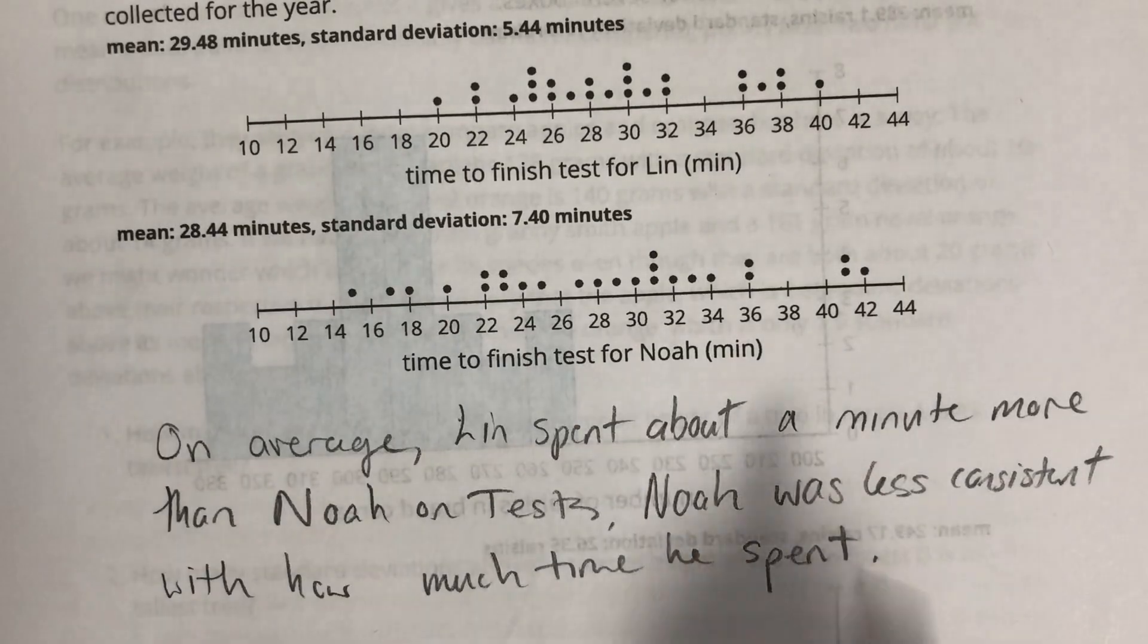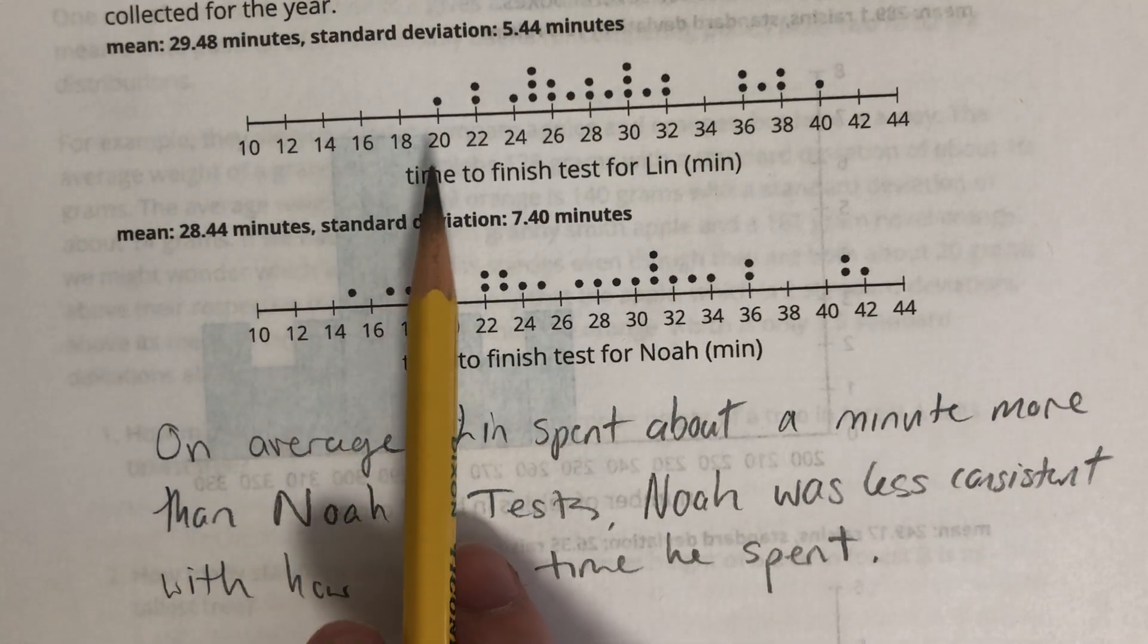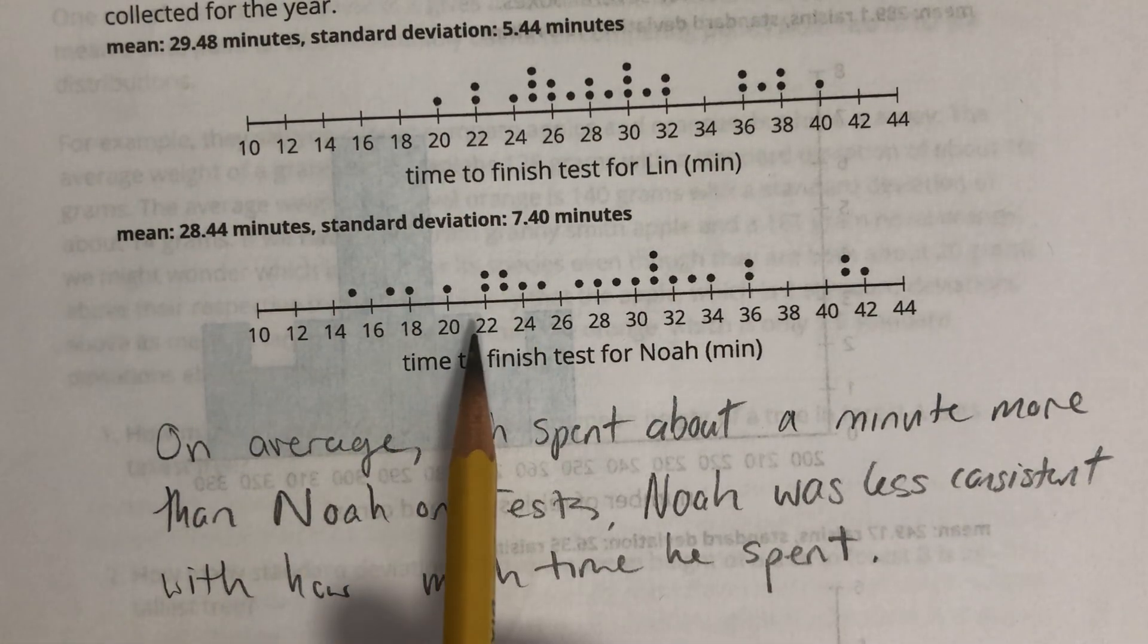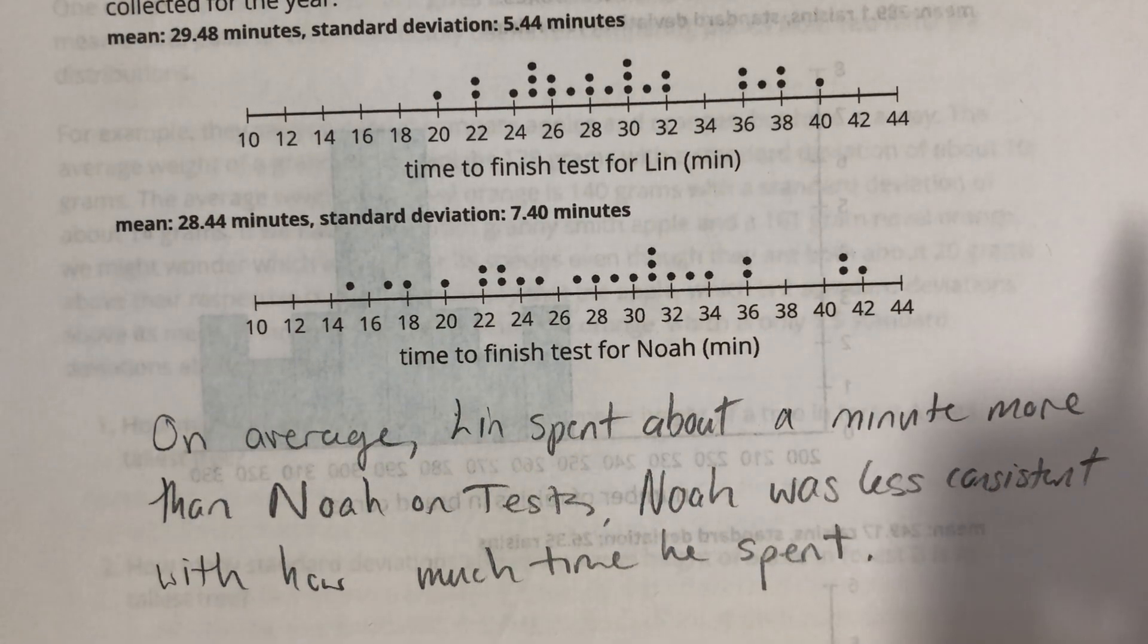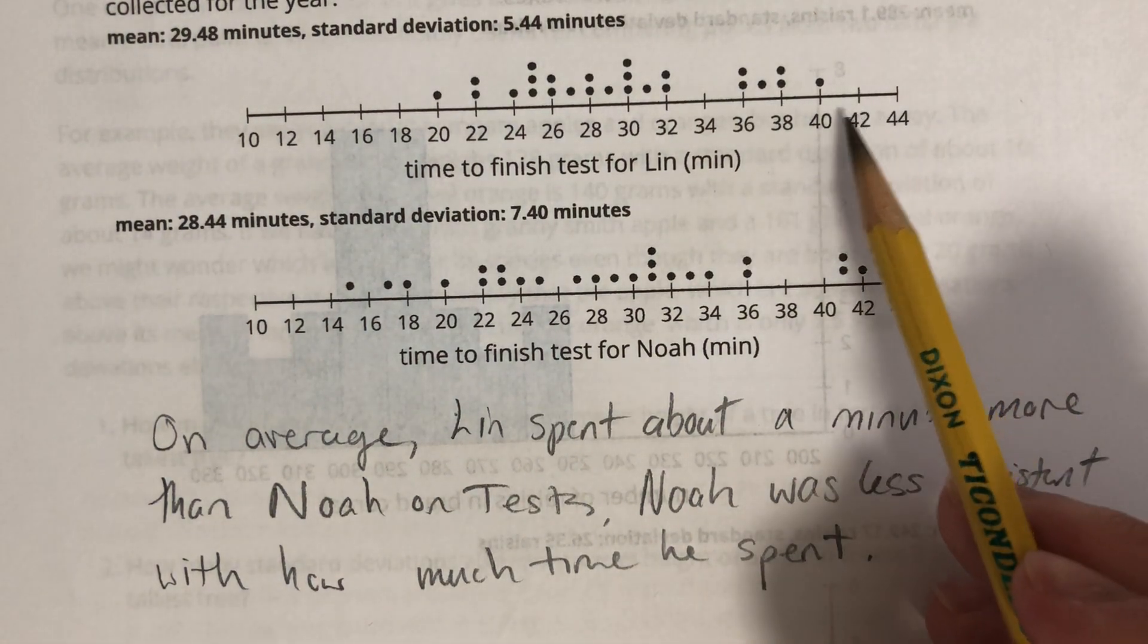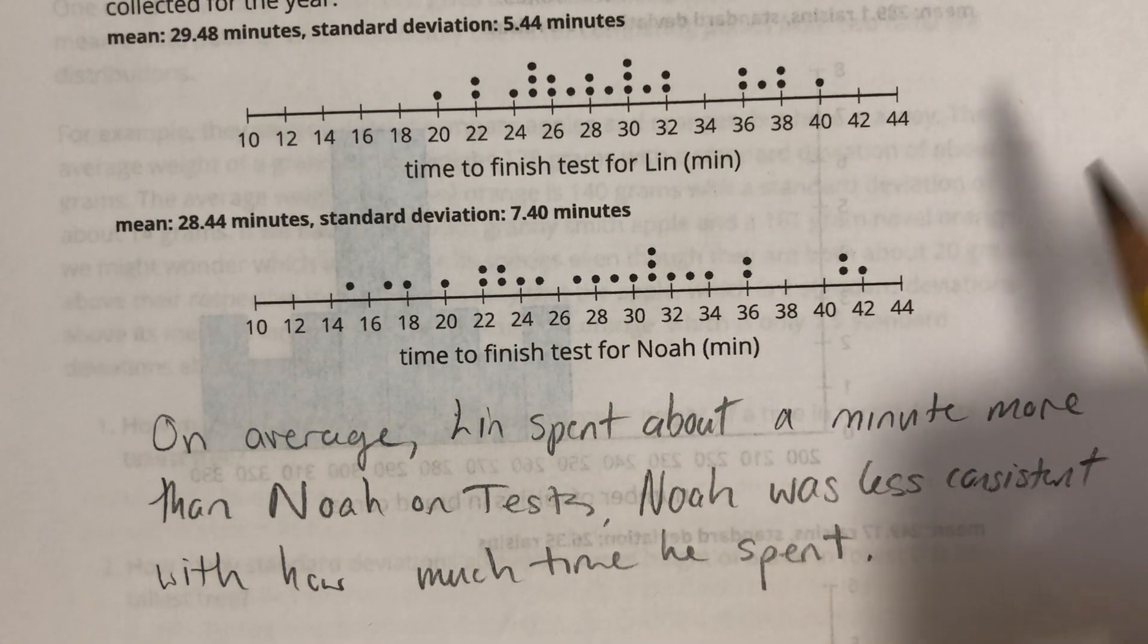Even though Lin has a higher mean than Noah, Noah took 41 minutes twice, 42 minutes once. Lin never took either of those amounts of time.